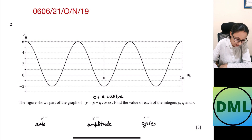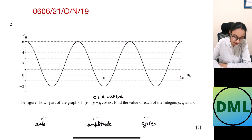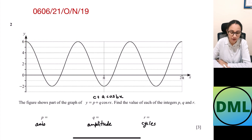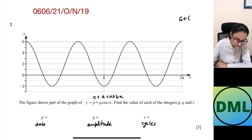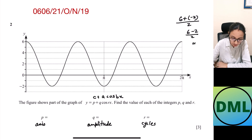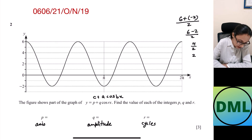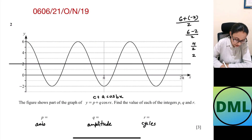The maximum value is 6 and the minimum value is minus 2. The middle of these two values will be your axis. To calculate that, you take 6 plus minus 2 divided by 2, which equals 6 minus 2 over 2, that is 4 by 2, which equals 2. That means my axis is at 2, so the value of p is 2.